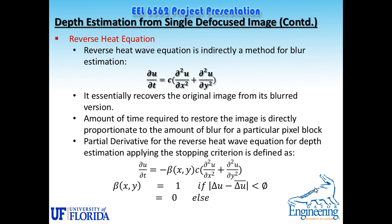The partial derivative for the reverse heat equation is given here. An additional function beta has been used, where beta is a function of spatial coordinates x and y, which equals 1 if the difference between del u and average del u is less than phi. Phi is kept as a value of 0.2 to 4 as a constant, and del u is a function of coordinates x and y, while bar del u is the average gradient.